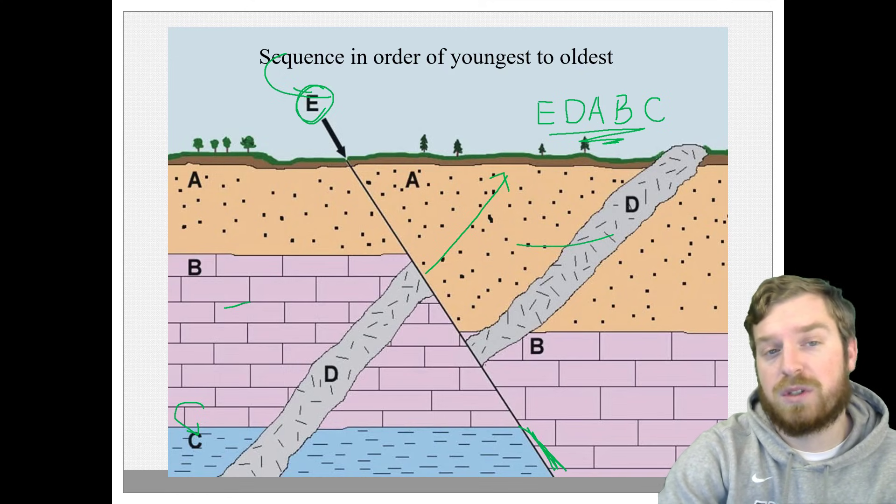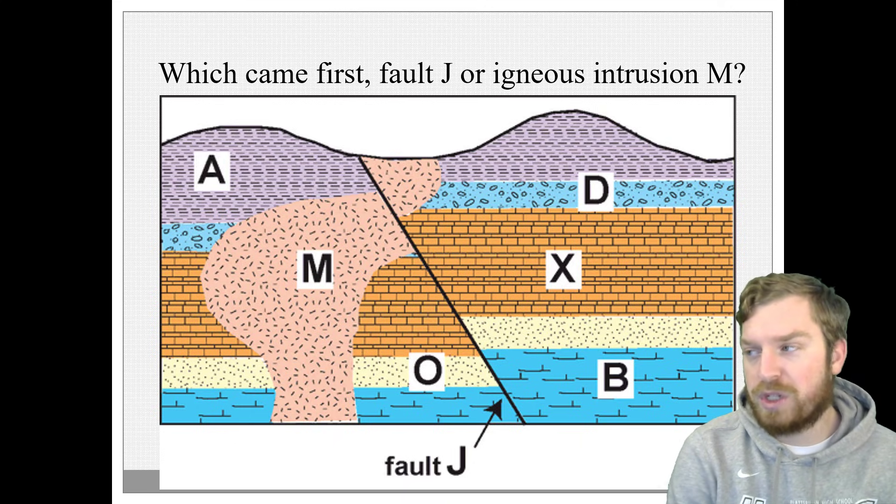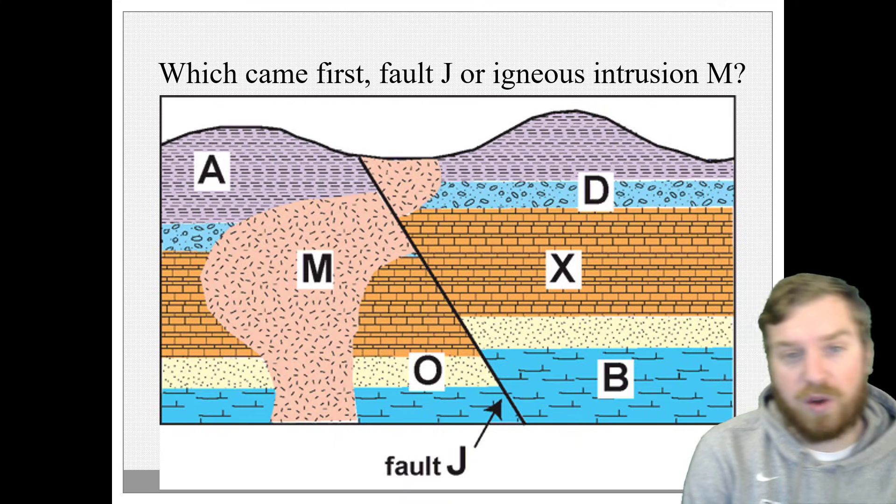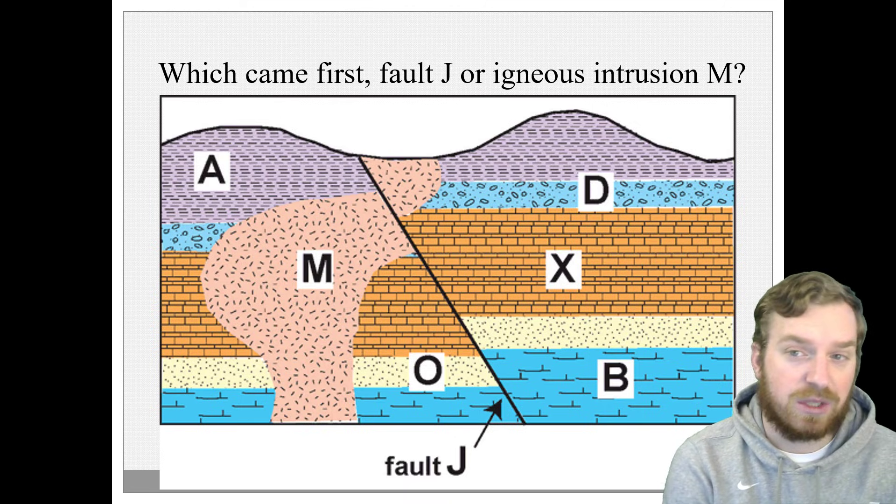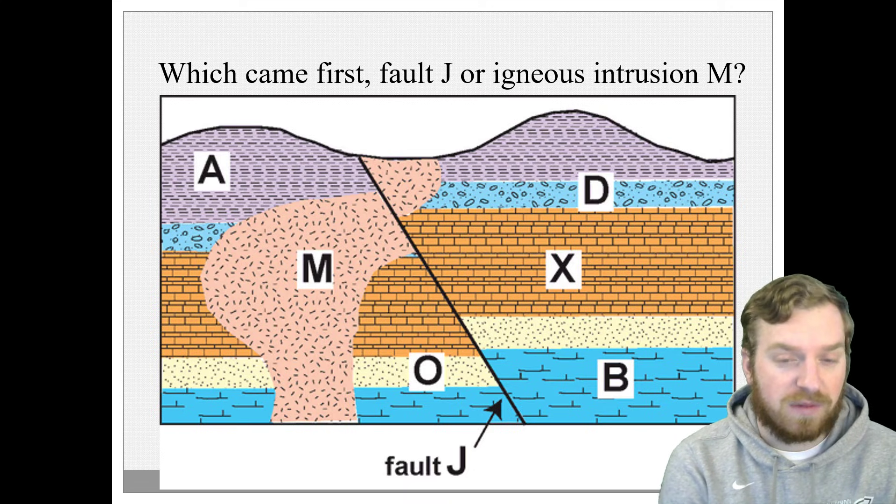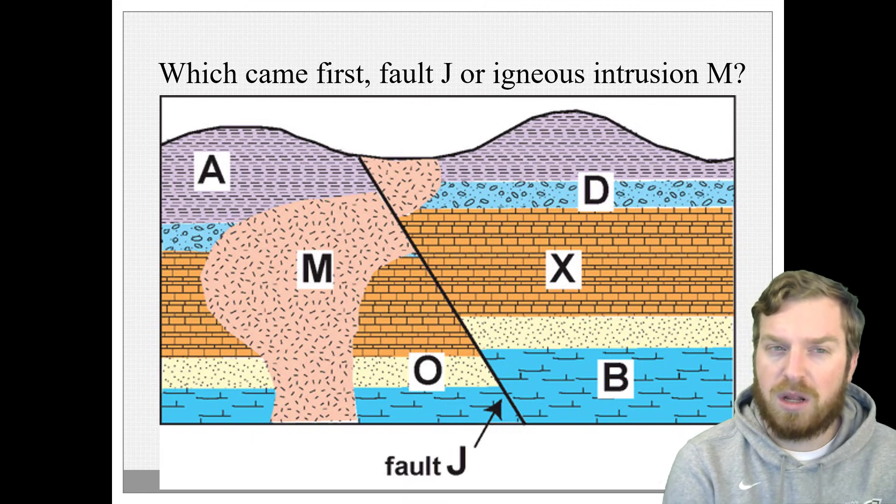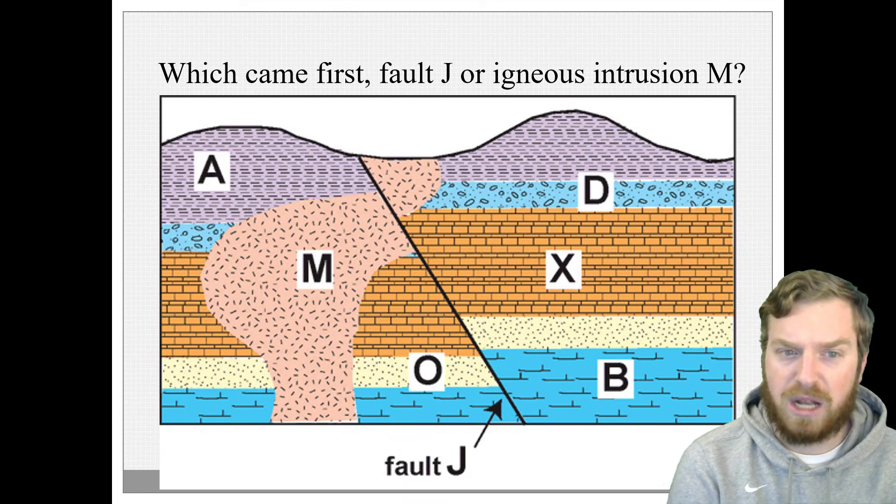So another small question for you. How about we do this one? Which came first, fault J or igneous intrusion M? Now this is the time where we can go all Dora the Explorer and I can pause for five seconds. Or you could pause the video and just take a thought to it. I'm going to just go ahead and answer it.